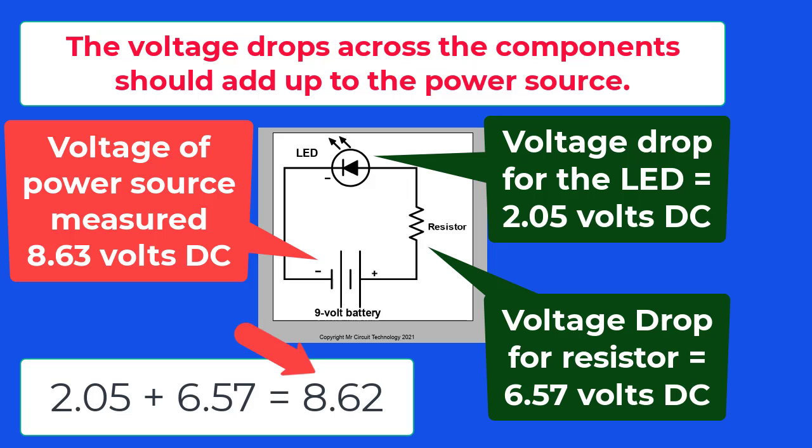Do the voltage drops in our example add up to the battery voltage of 8.63? It is off by 1 hundredth of a volt. That is probably because the battery voltage went down while we were making these measurements.